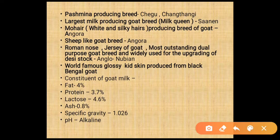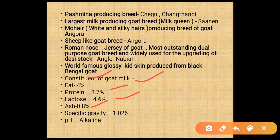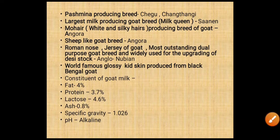Composition of goat milk: fat is 4%, protein is 3.7%, lactose is 4.6%, ash content is 0.8%, specific gravity is 1.026, and its pH is alkaline.